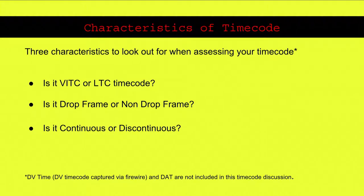There are three characteristics you want to look for when assessing your time code. Number one: is it VITC or LTC? Two: is it drop frame or non-drop frame — very much an NTSC thing. Three: is it continuous or discontinuous? Note that DV time code captured via FireWire, DAT, and non-SMPTE time codes are not included in this discussion — that's a whole other topic.